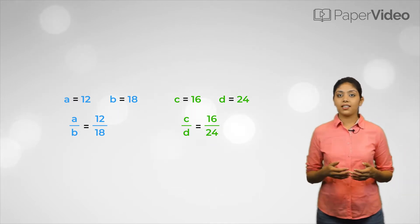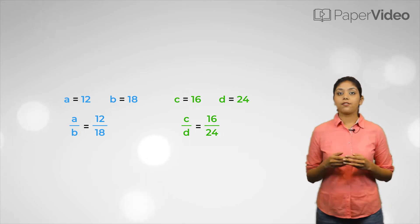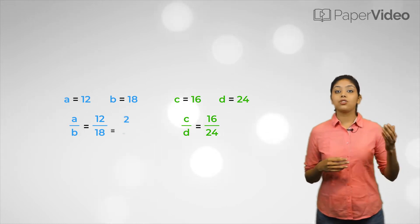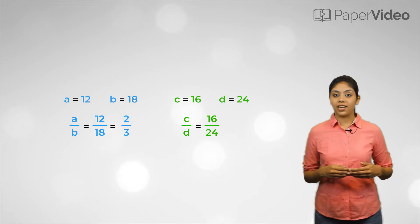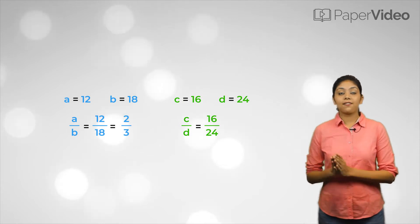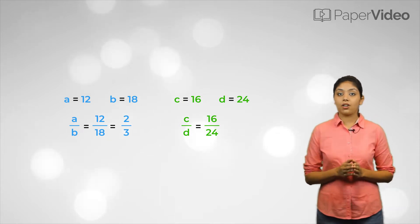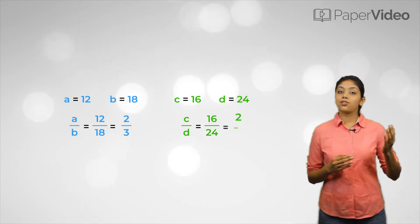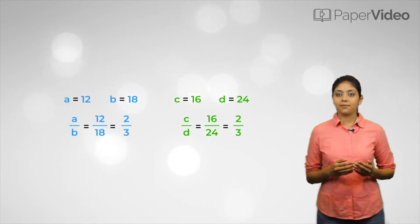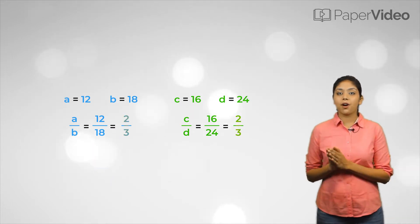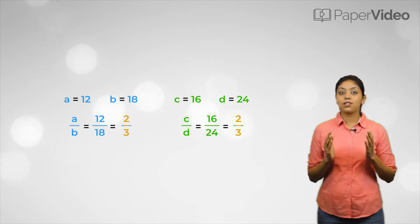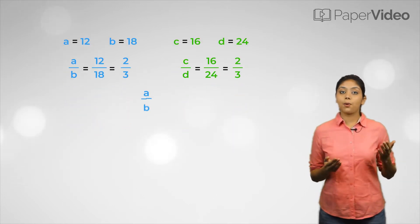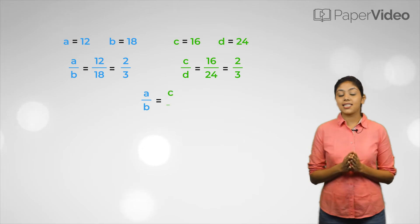If we divide the numerator and denominator of the first ratio by 6, we get 2 upon 3. And if we divide the numerator and denominator of the second ratio by 8, we get 2 upon 3. Since the simplified form of the ratios are equal, we can say that the ratios a upon b and c upon d are equal ratios.